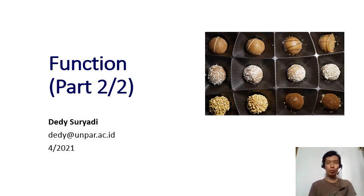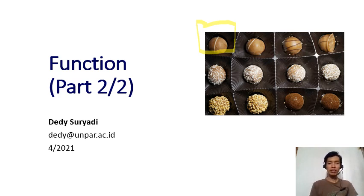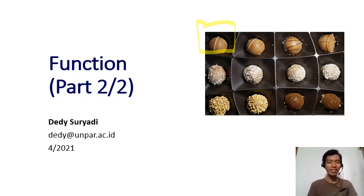Hello and welcome back to the introduction to computer programming course. Today I'm going to talk about functions — this is the second part. Recall that a function means we create a block in our code or algorithm that performs a specific task. The purpose is that if something goes wrong or if you want to modify something, you can easily isolate one block and repair just that block, instead of going through all your code to find which lines need fixing. This week we'll talk about different types of functions, a bit different from what we covered last week.